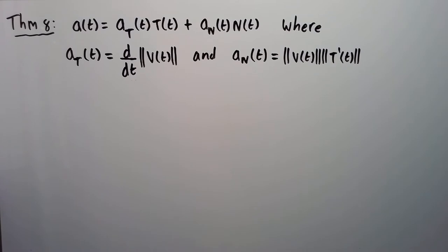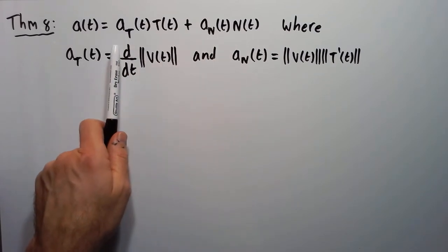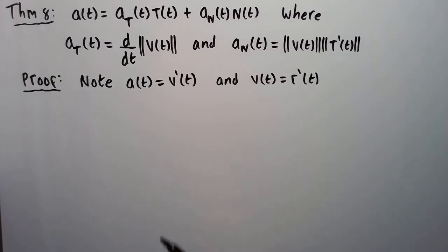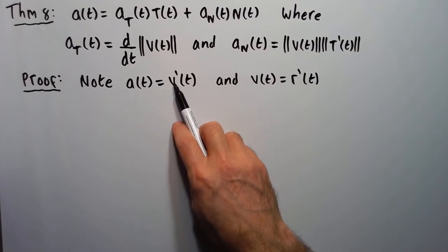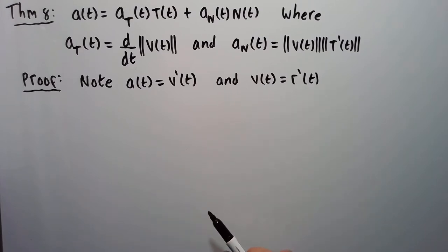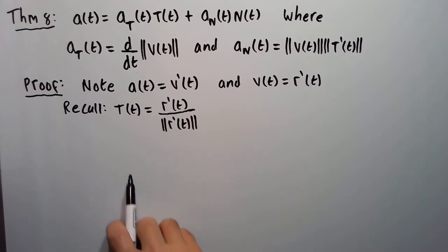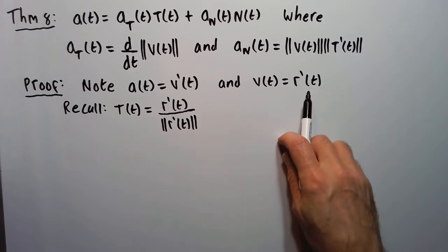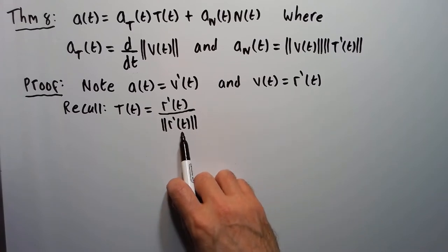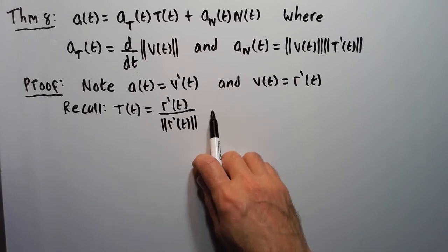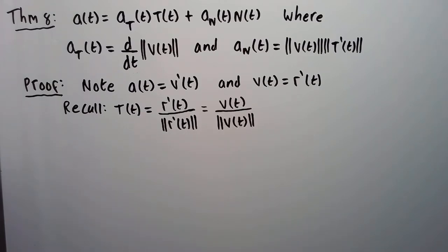The proof will involve the product rule. First, note that acceleration is by definition the derivative of velocity, and velocity is the derivative of the position function r. Next, recall that the unit tangent vector T was defined as r prime over the magnitude of r prime. Since r prime is the velocity and the magnitude of r prime is speed, we can replace those.